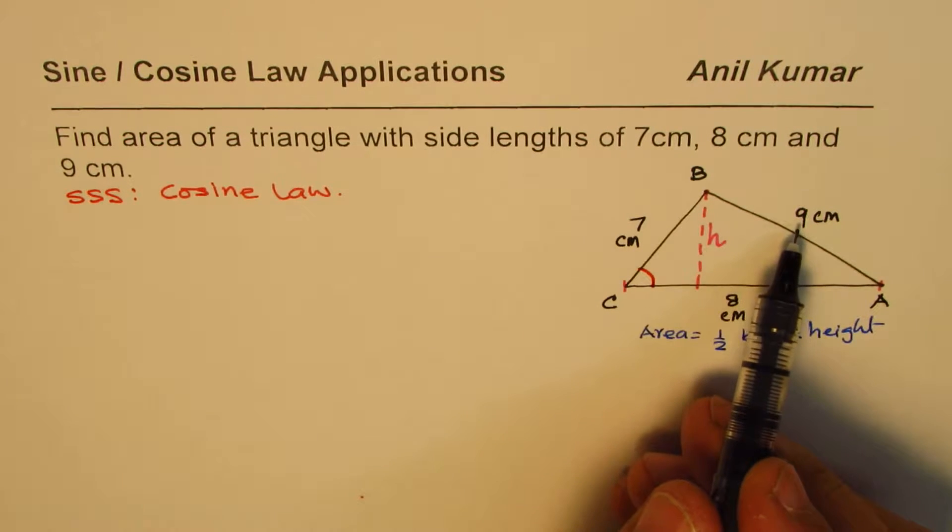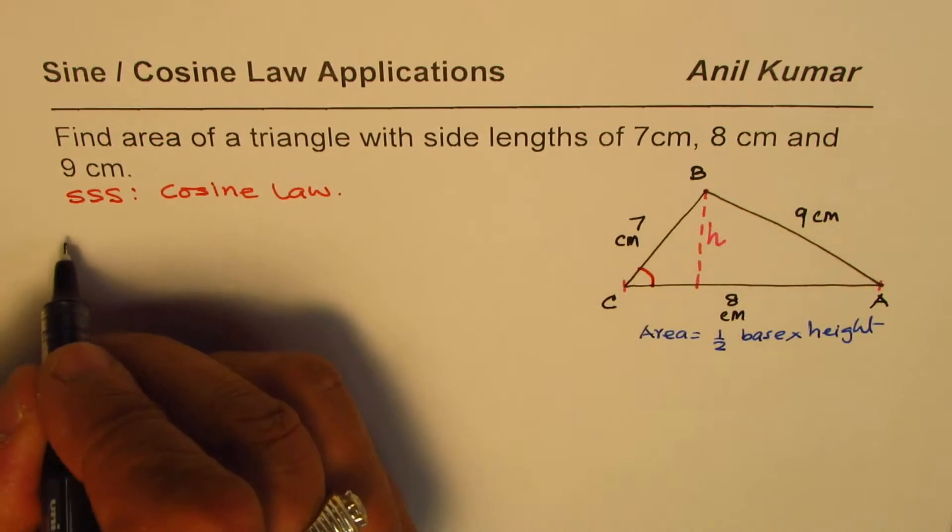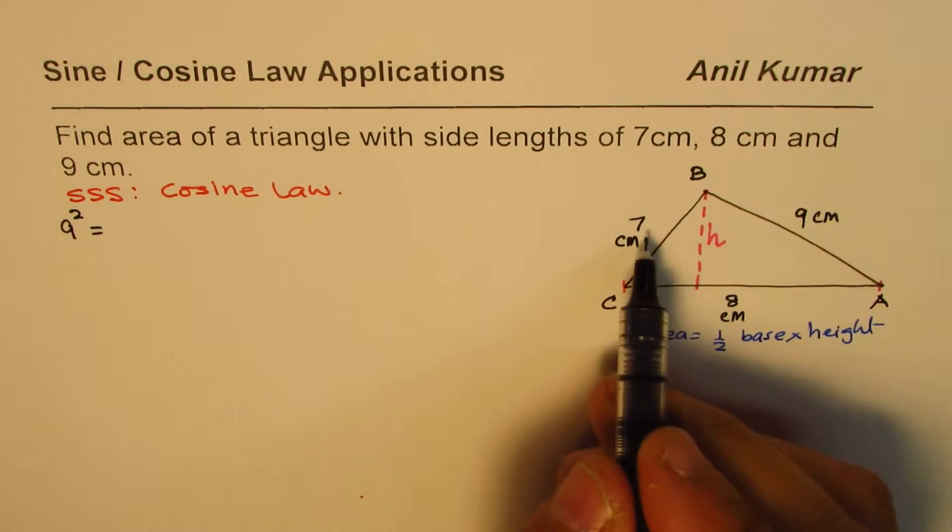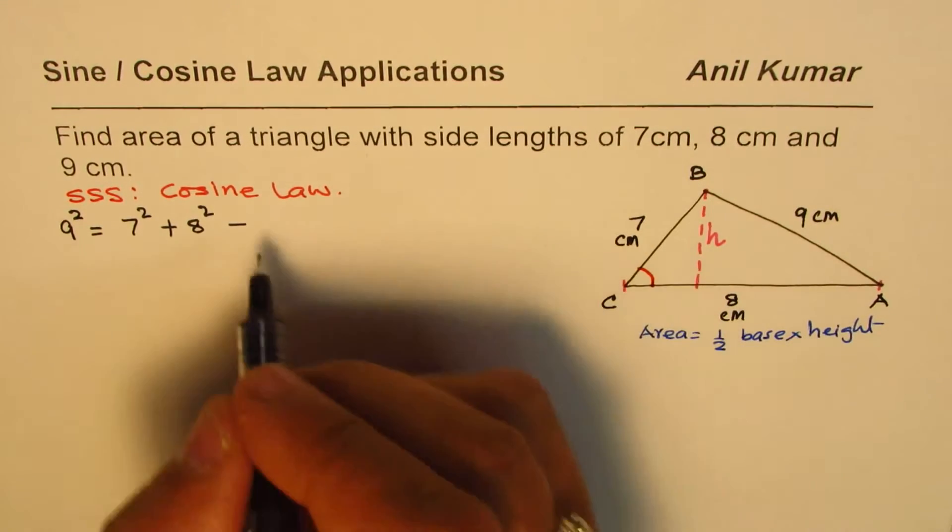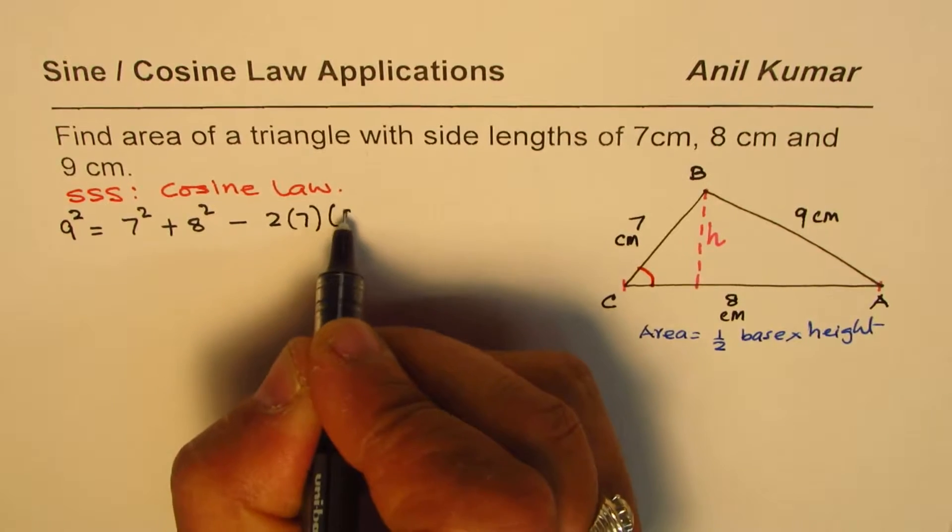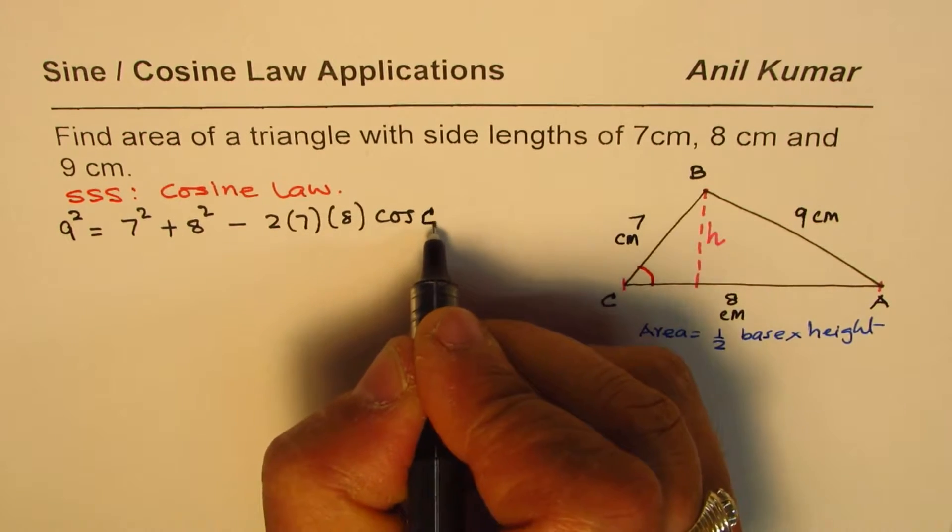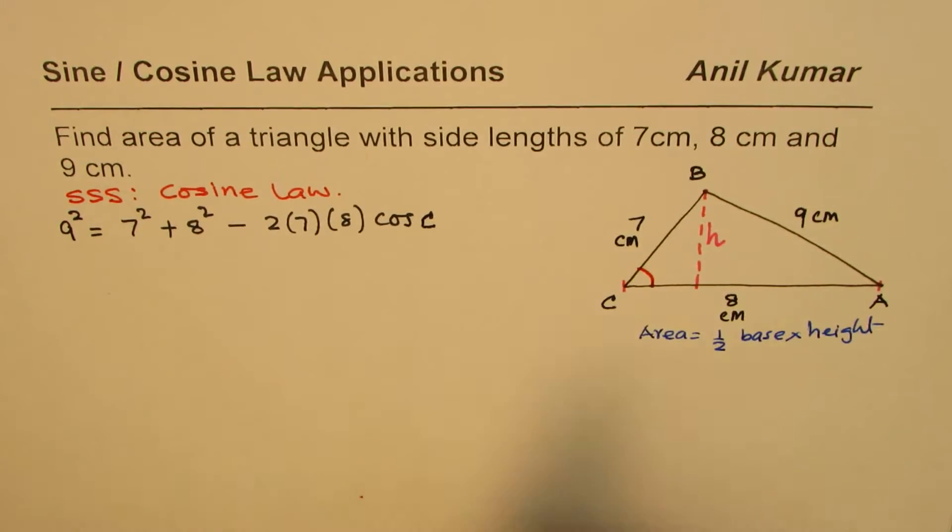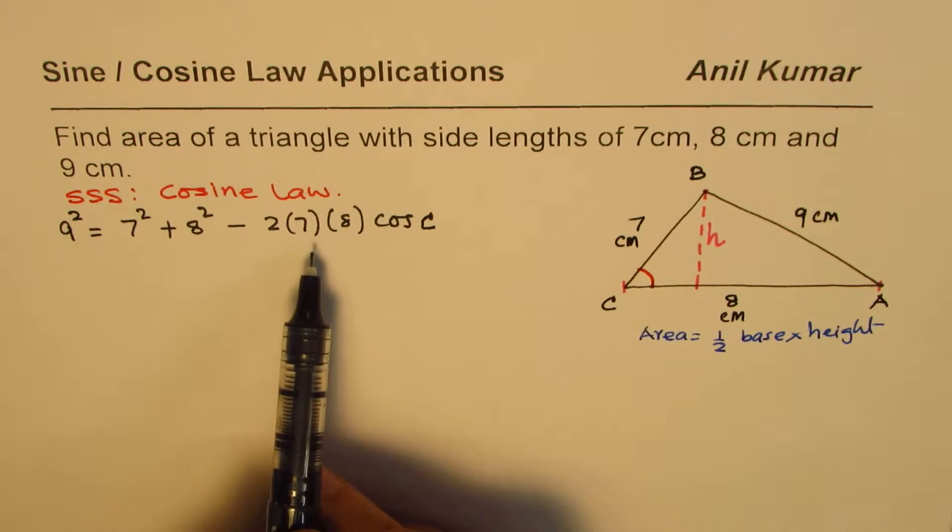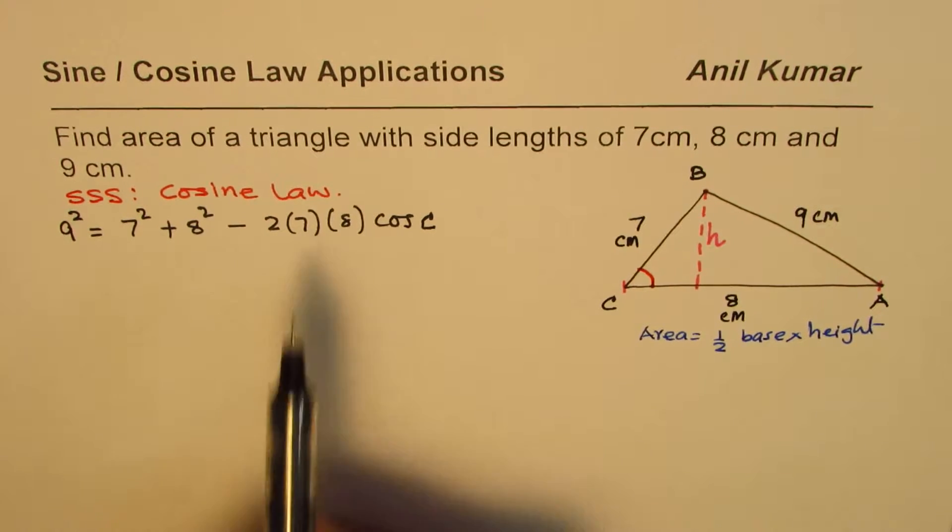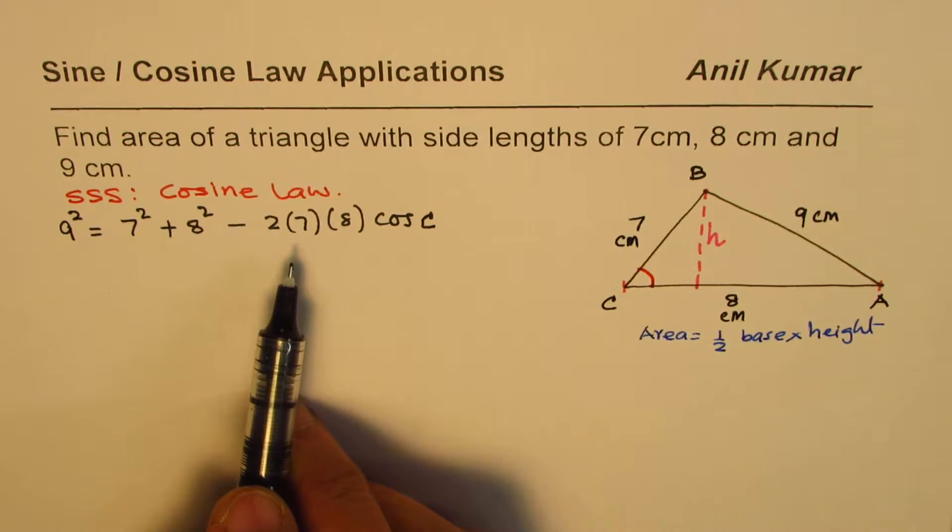So we are given the side opposite to two adjacent sides. We can write this as 9² = 7² + 8² - 2(7)(8)cos C. So that is how you write cosine law. Since we are doing applications of cosine law and sine law, you are very familiar with these equations, so I'm not actually writing those equations. If you're not very clear, you can look into those videos and get practice before doing applications.